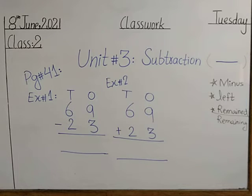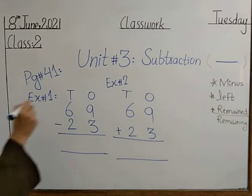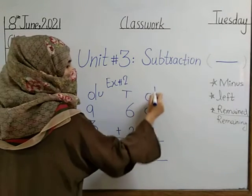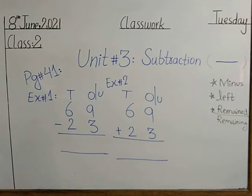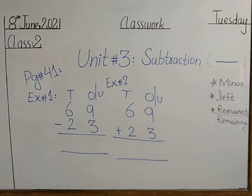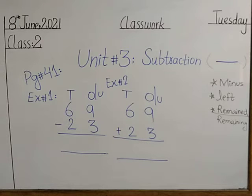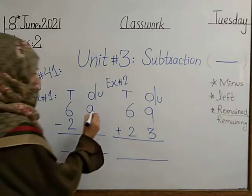From where will we start our calculation? We will start from the unit or ones place value number. Nine minus three — nine minus three is equal to what?